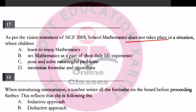Second option: see mathematics as a part of their daily life experience — this is a very important and correct point. Third option: solve meaningful problems — this is correct. Fourth option: memorize formulae and algorithms. Memorize, by heart, rote learning — this is wrong. The negative option is rote learning, which is incorrect according to NCF 2005.